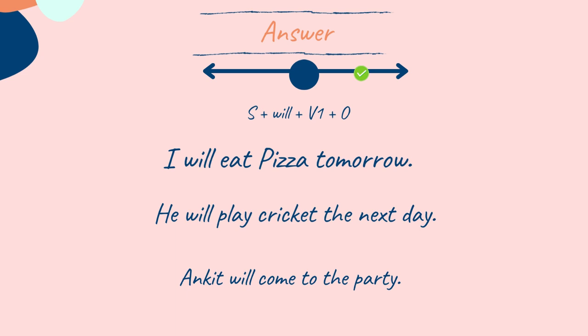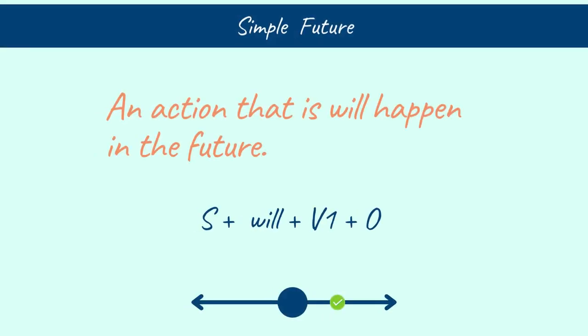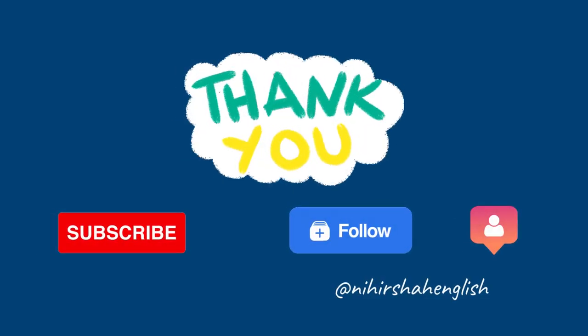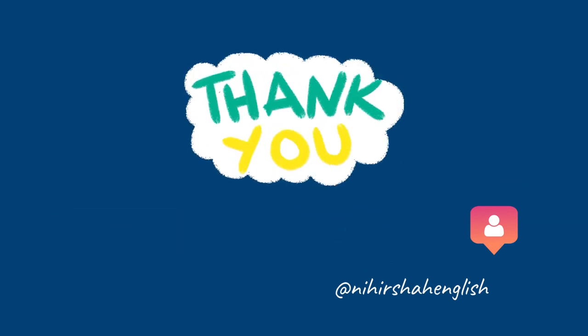I hope you gave the correct answers. Let's quickly revise simple future tense. If an action occurs in the future, then it is included in simple future tense. The structure is subject plus will plus verb's first form plus object. The position of this tense in the timeline is on the right side, shown by a green tick. That's all in this video. Thanks for watching. Like, share, comment and subscribe if you found the video helpful. We will meet in the next video. Goodbye.